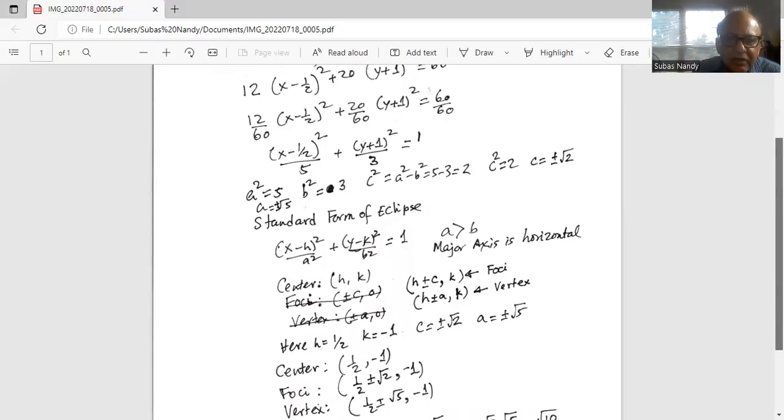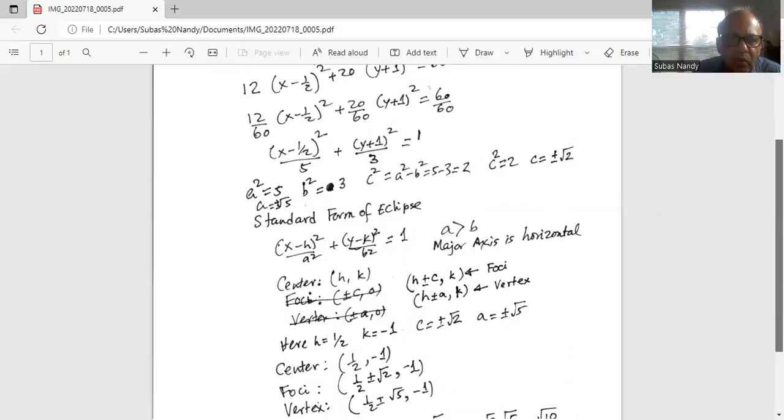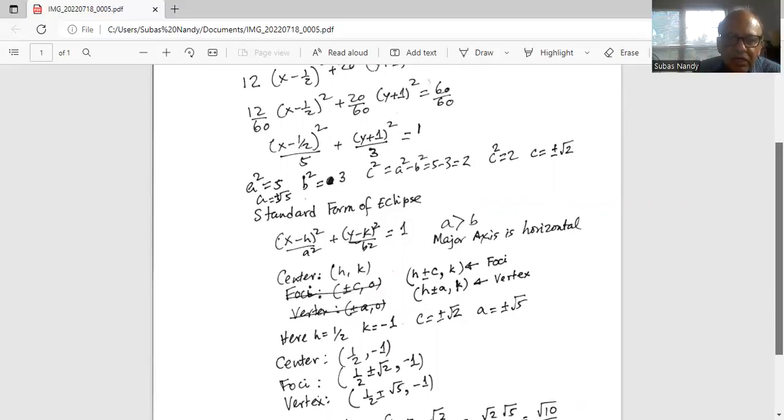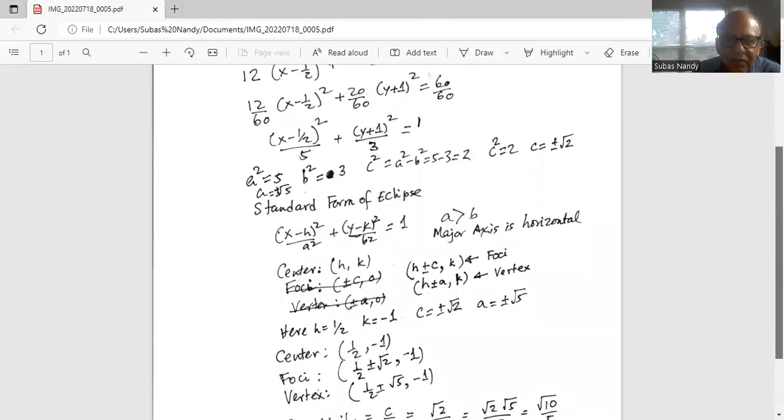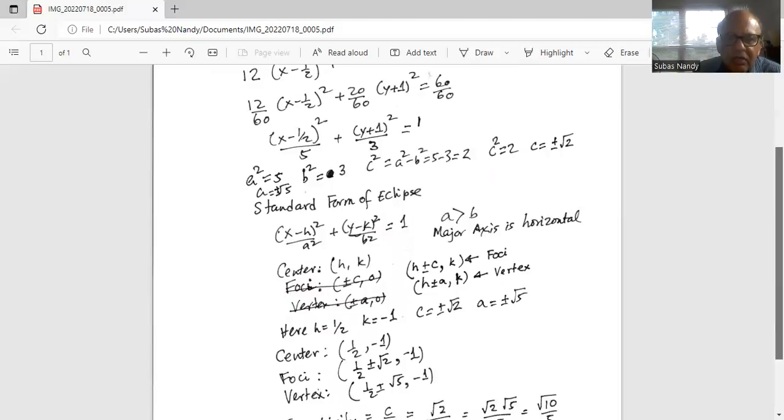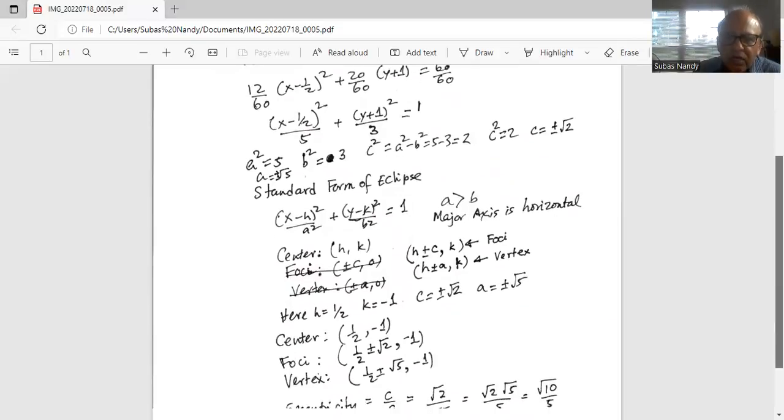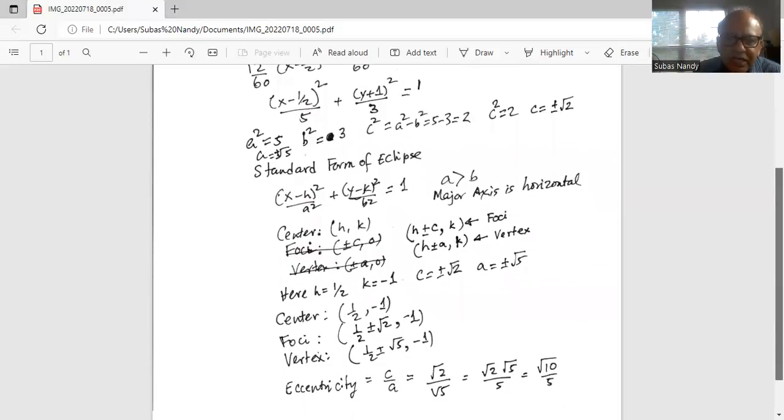So the center, remember center is hk, is half minus 1, foci is h plus c. So h is half plus minus square root of 2, comma minus 1 and vertex is h plus minus a. So it is half plus minus square root of 5 comma minus 1 because the y coordinate is k.